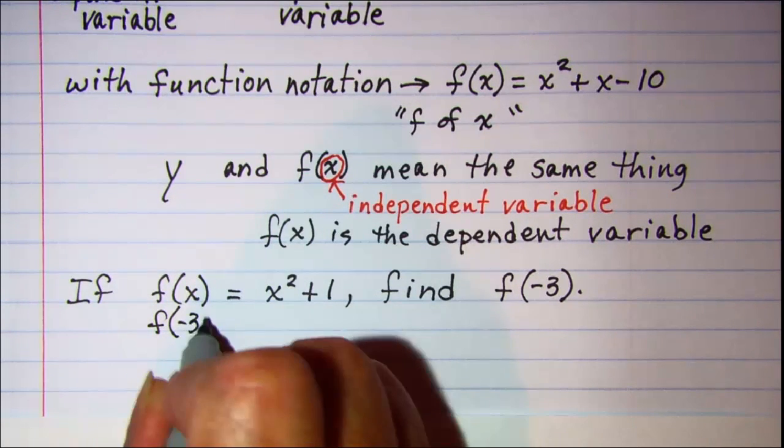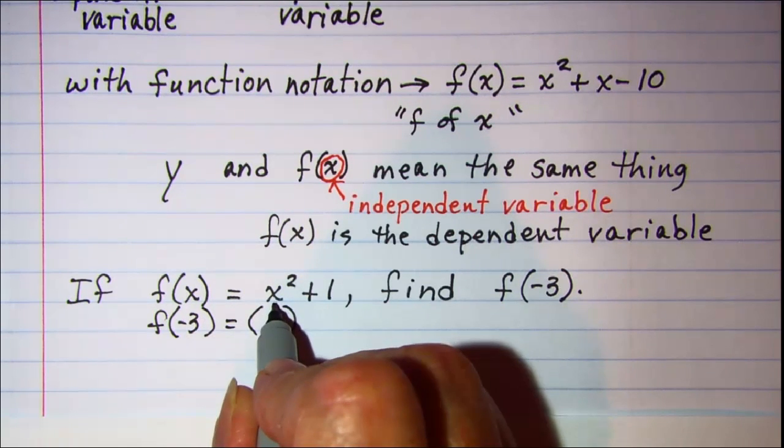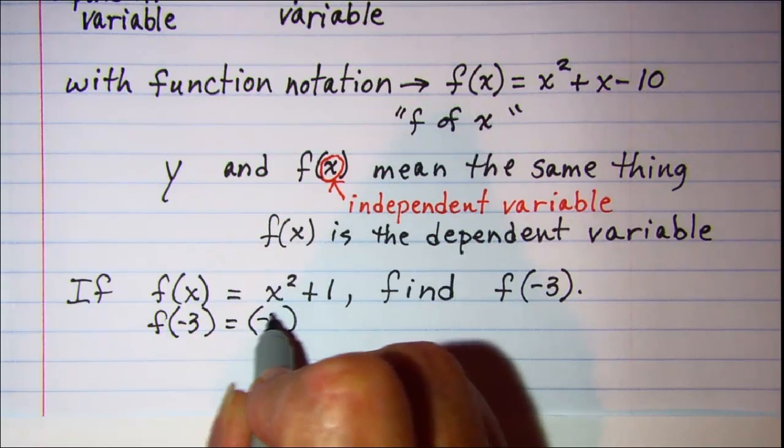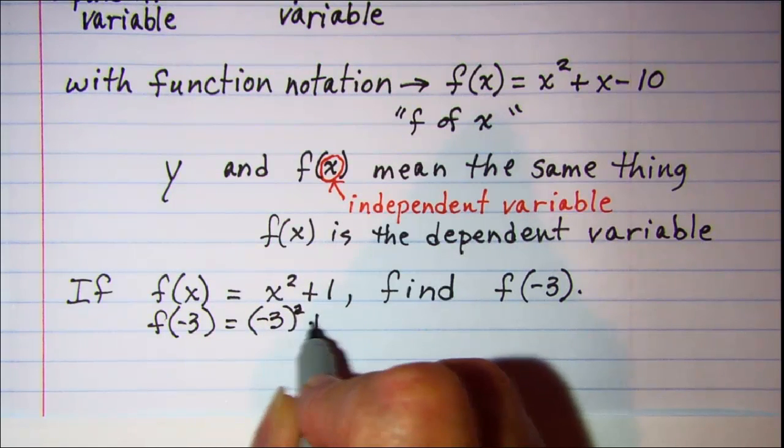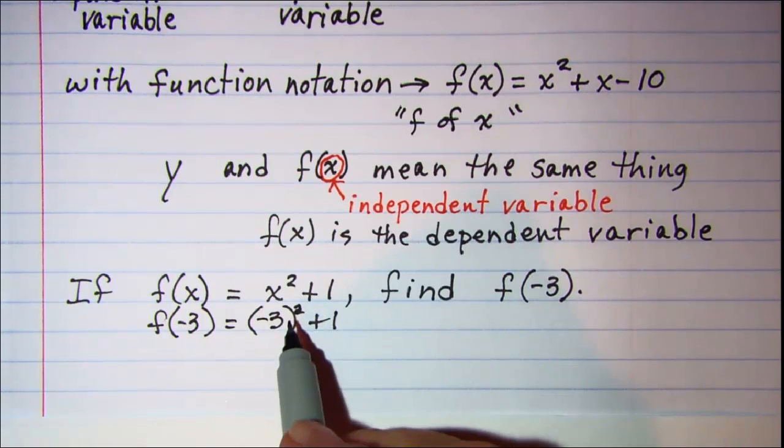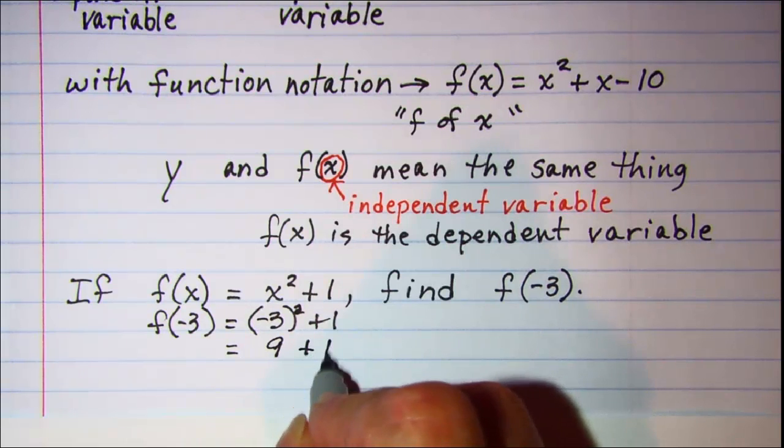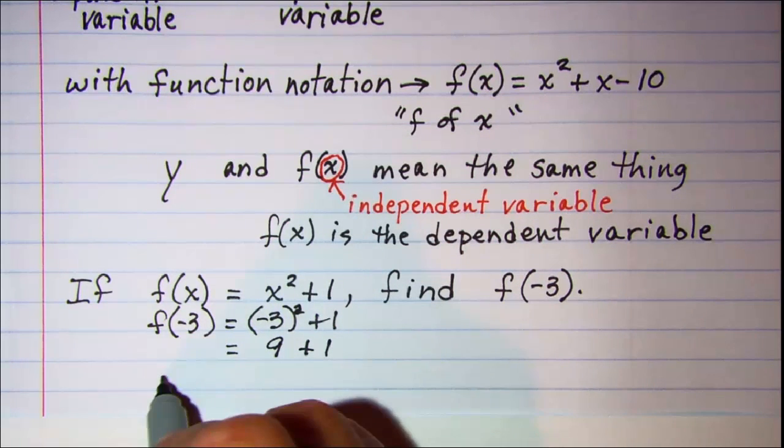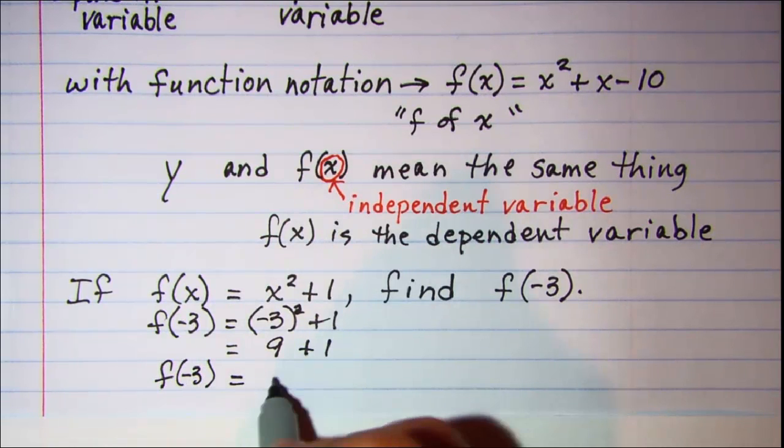So f(-3) is going to equal and then we'll put negative 3 in here in place of x and that value is squared plus 1. Now negative 3 squared is 9 so we have 9 plus 1 which means that f(-3) is equal to 10.